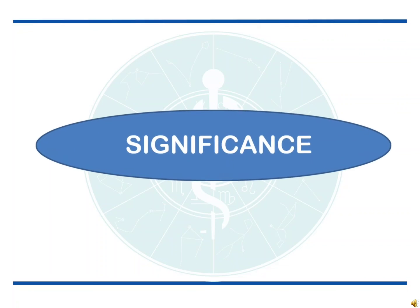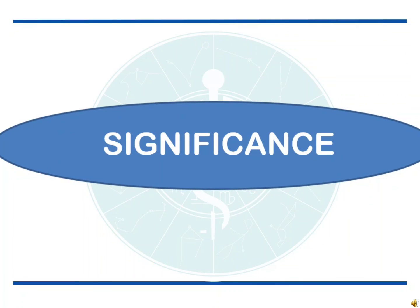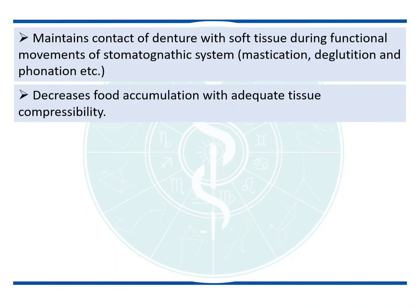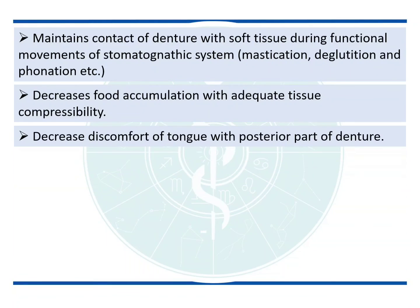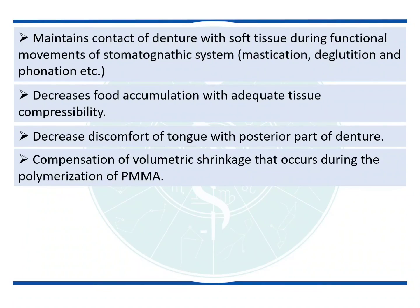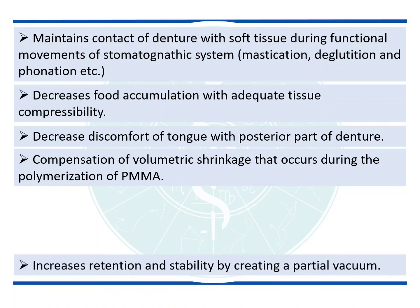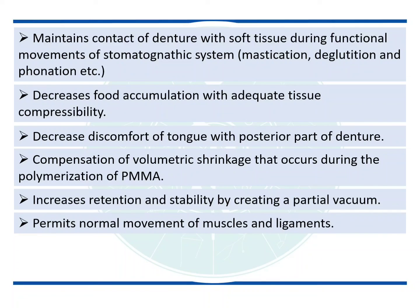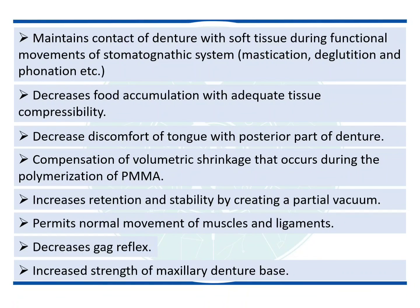The significance of the PPS is that it maintains contact of the denture with soft tissues during functional movement of the stomatognathic system. It decreases food accumulation with adequate tissue compressibility, decreases patient discomfort of the tongue with the posterior part of the denture, and compensates for the volumetric shrinkage that occurs during polymerization of PMMA. It increases retention and stability by creating a partial vacuum, permits normal movement of the muscles and ligaments, decreases the gag reflex, and increases the strength of the maxillary denture base.